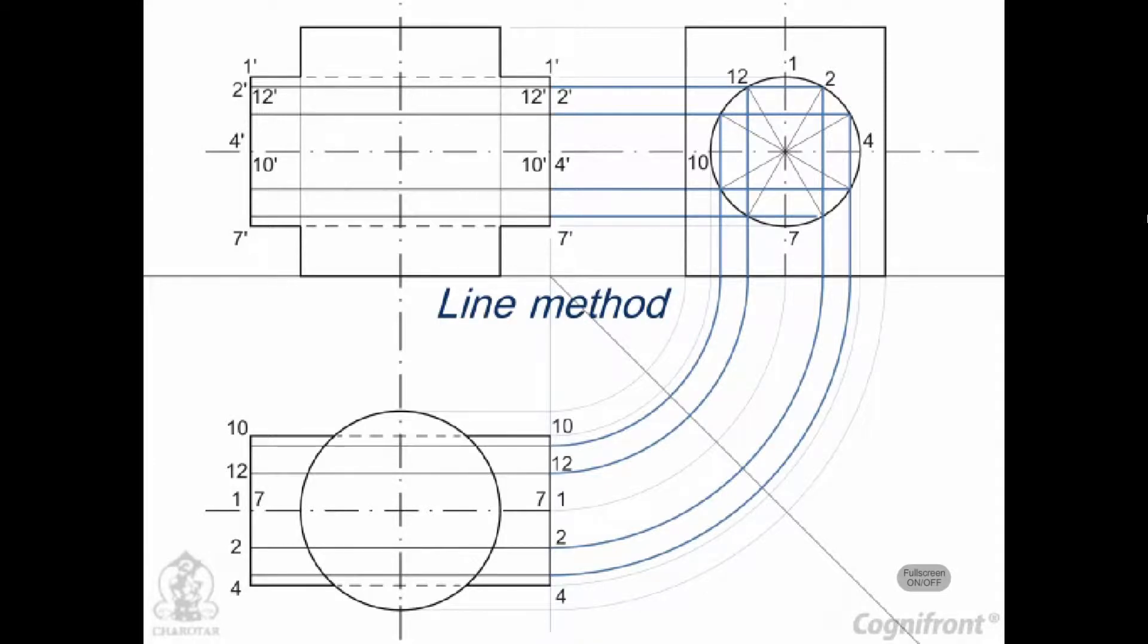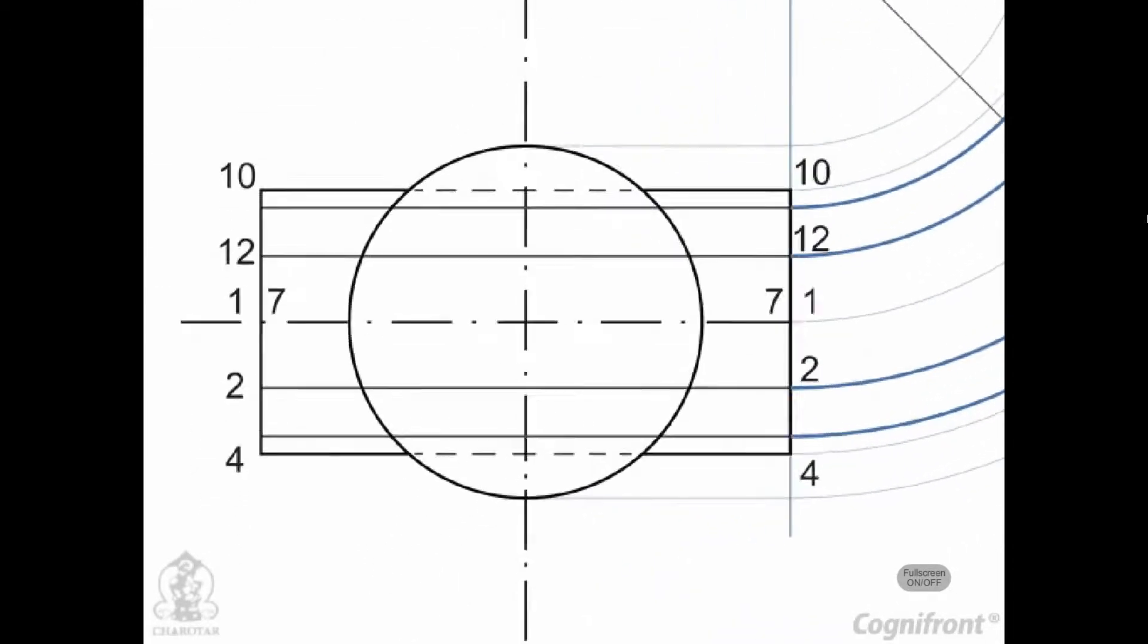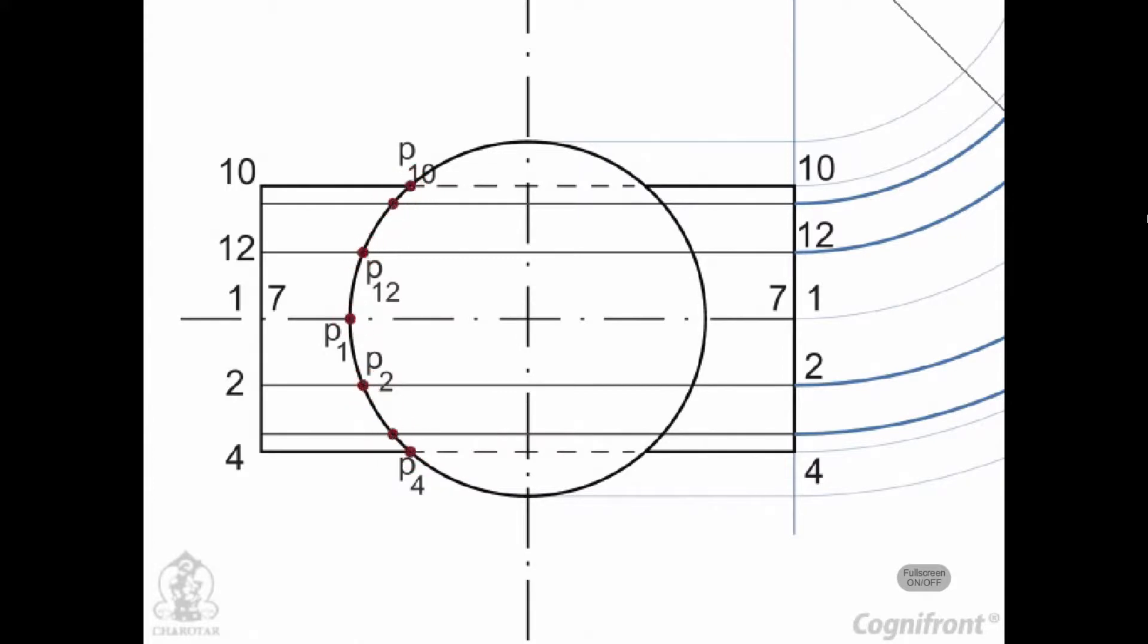Line Method: Mark points P1, P2, etc. at which lines 11, 22, etc. intersect the circle showing the surface of the vertical cylinder in the top view.